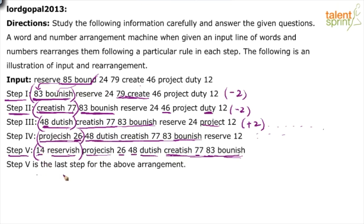Why are some numbers added 2 and others subtracted 2? Simple: if the number is odd, subtract 2 — 85 minus 2, 79 minus 2. If the number is even, add 2 — 46 plus 2, 24 plus 2, 12 plus 2. So the rules are: odd numbers minus 2, even numbers plus 2; remove the last letter of each word and add 'ish'; alternate number-word and word-number pairs each step; final arrangement has numbers in ascending order and words in reverse alphabetical order.